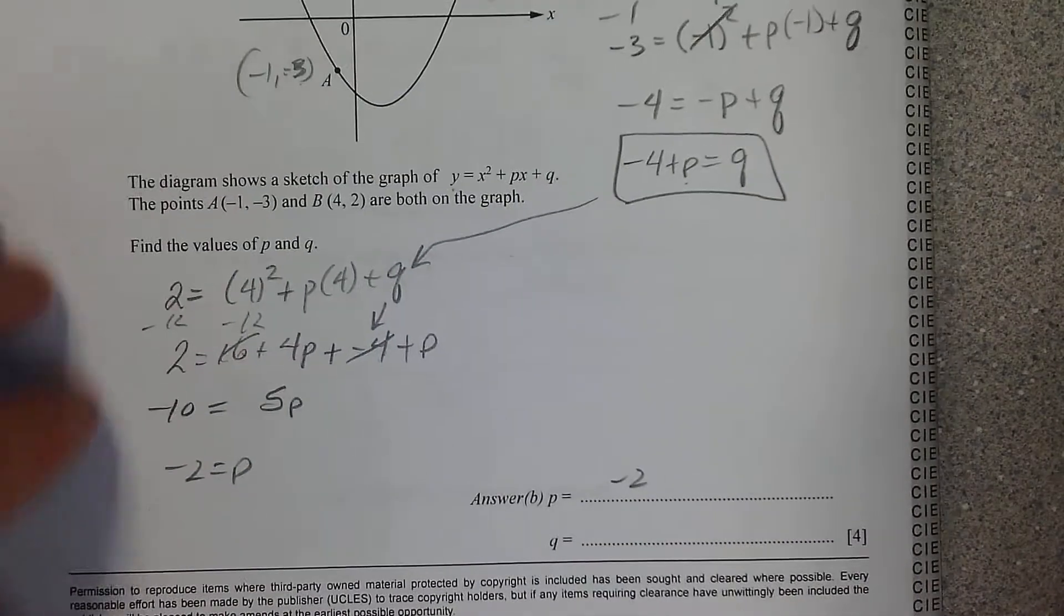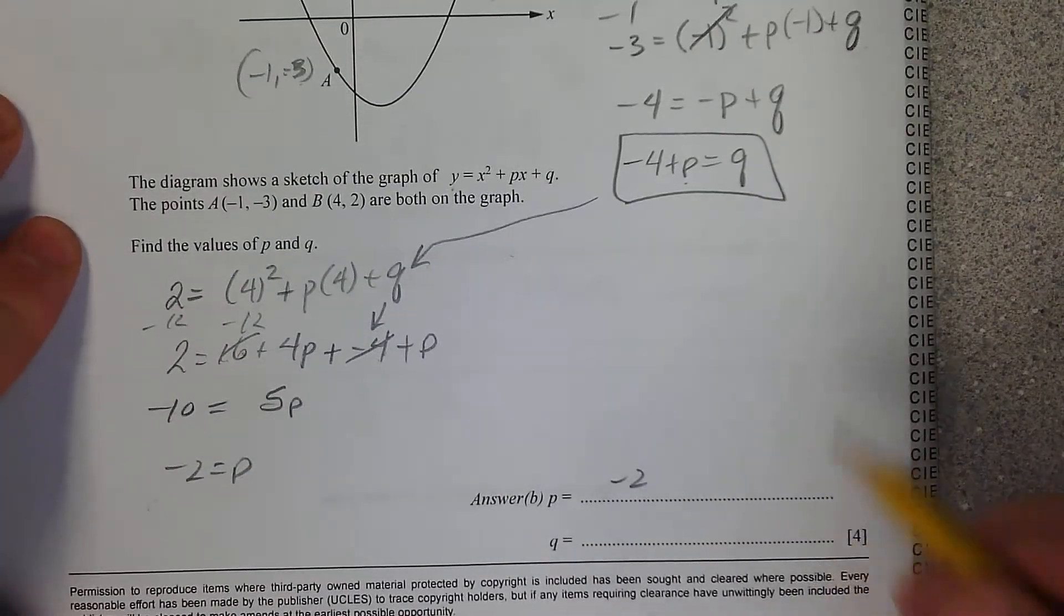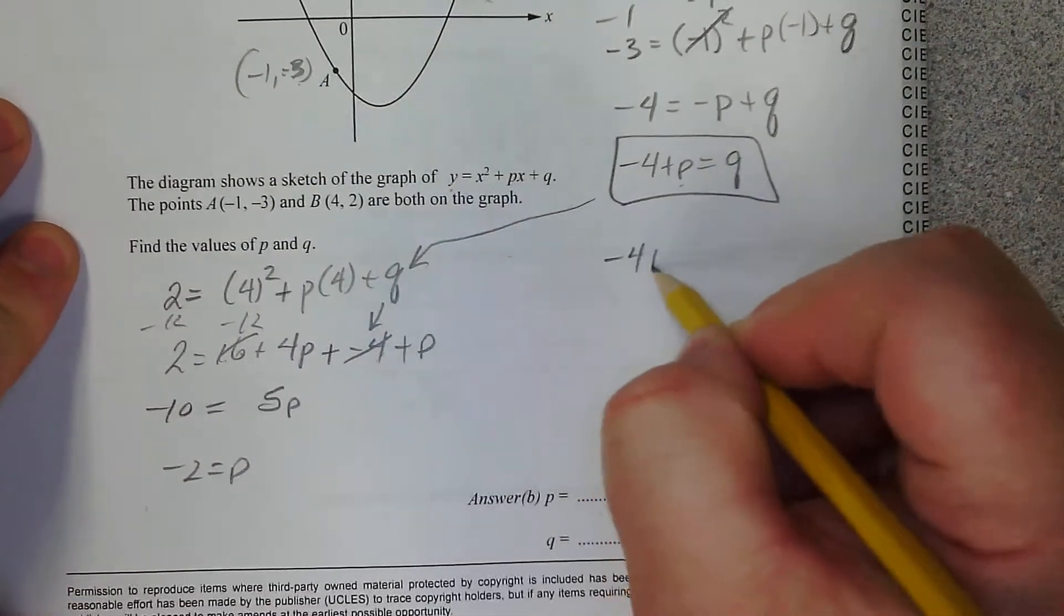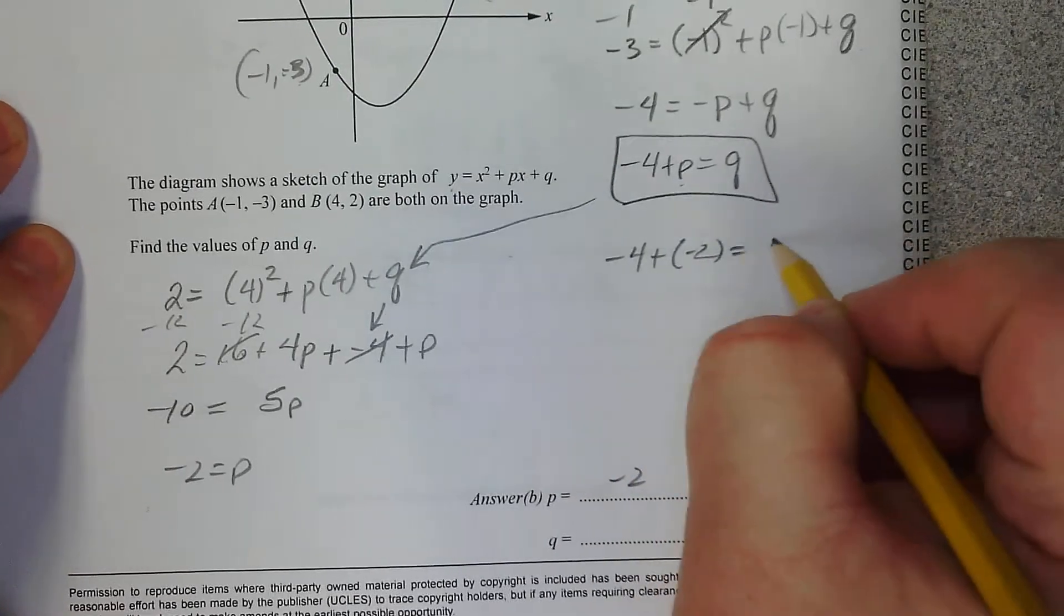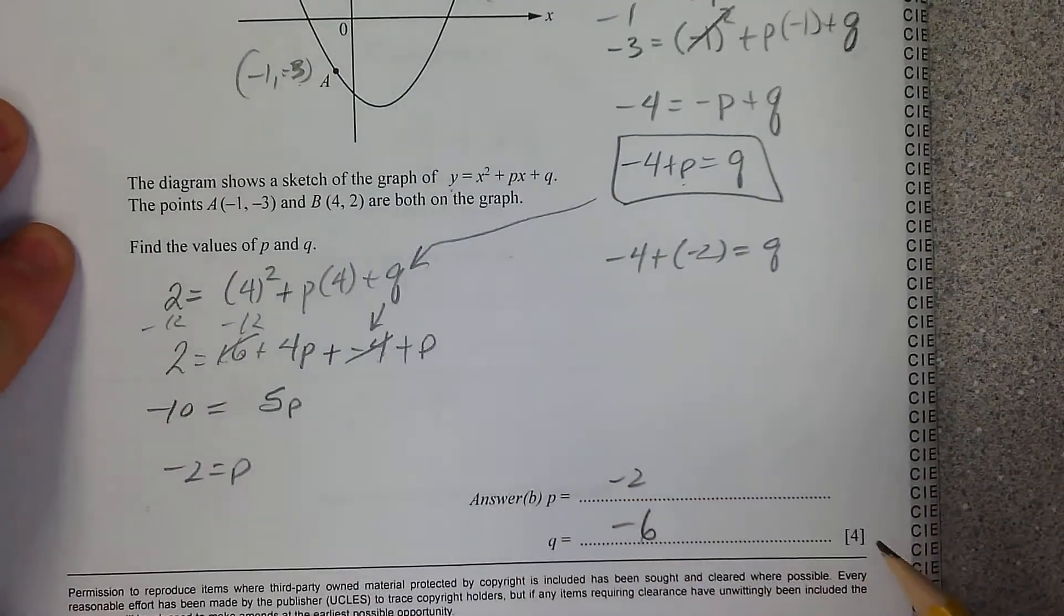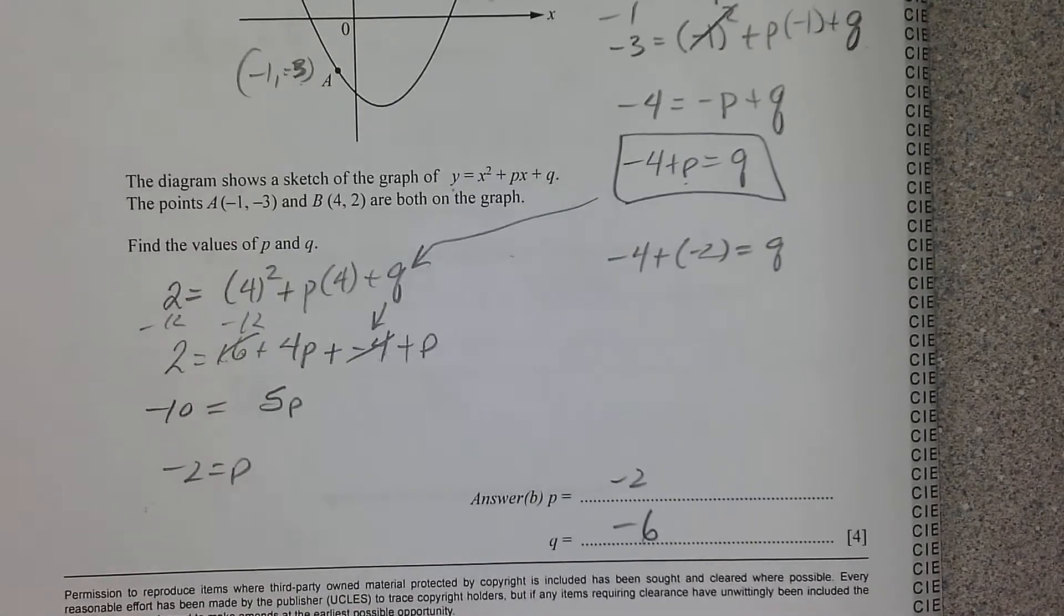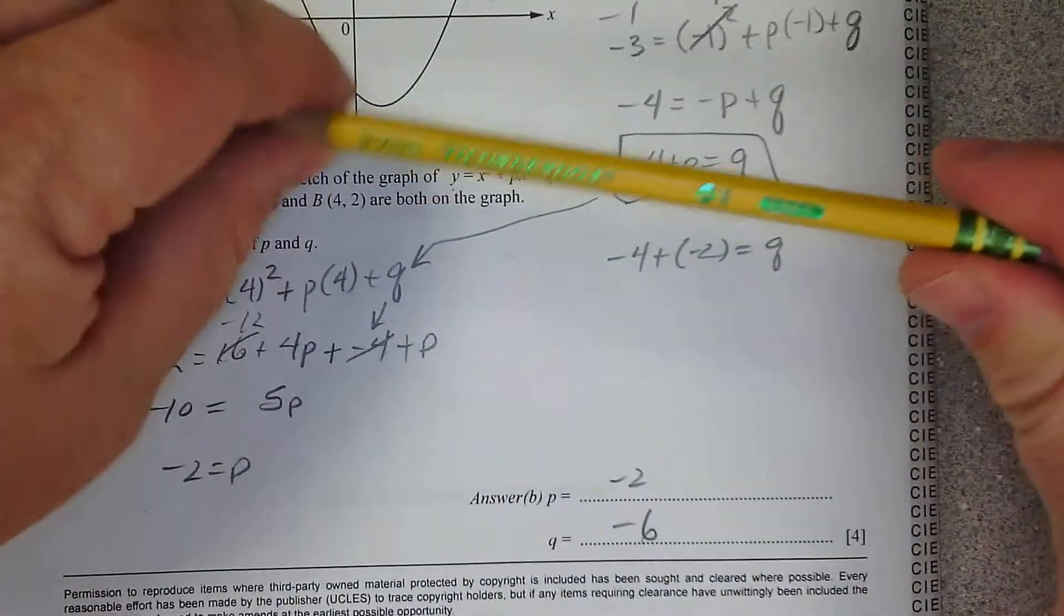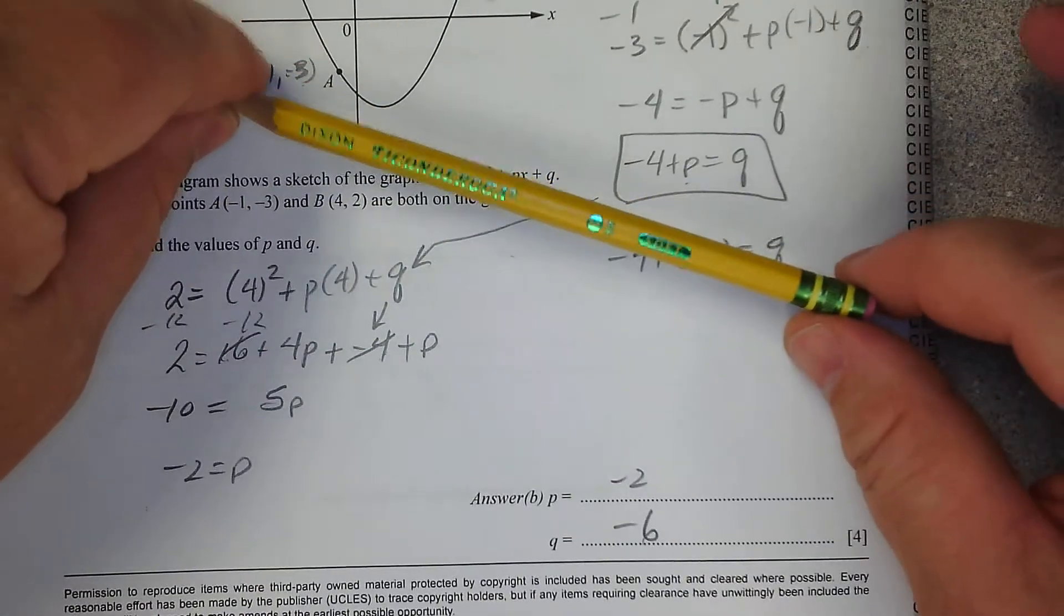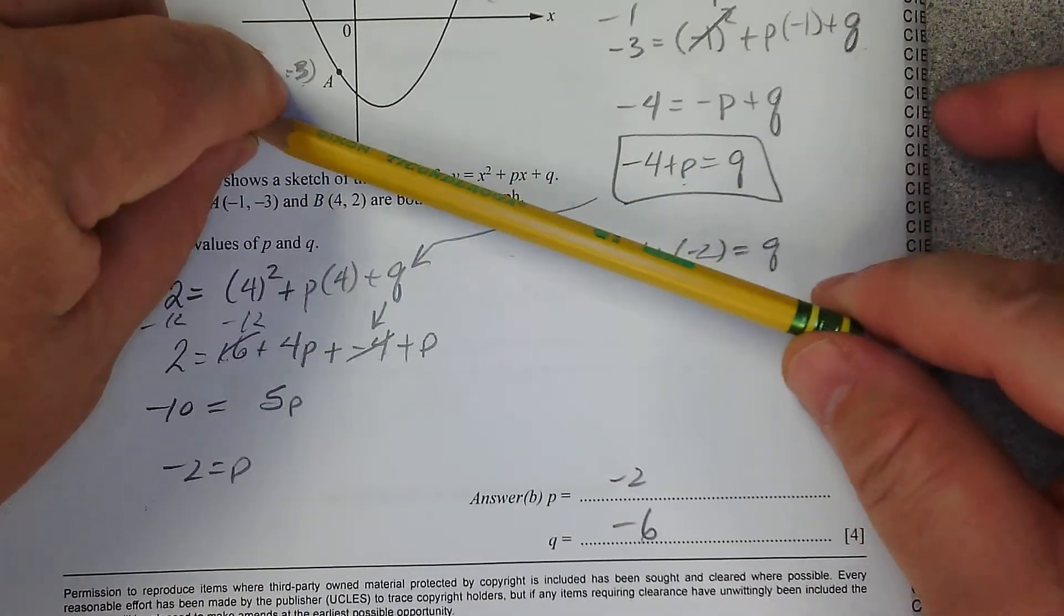Boom, done. Okay, now if that's true, if that's negative 2, then q is negative 6. Man, how fancy is that? Wow, this pencil done did service good.